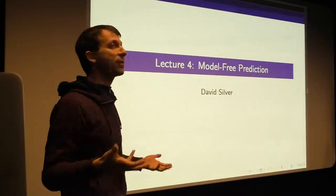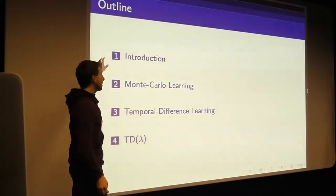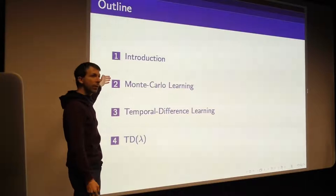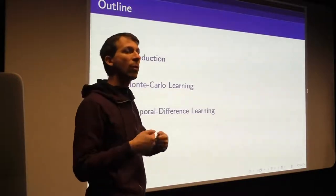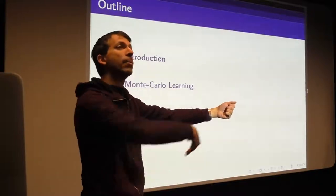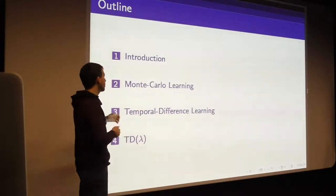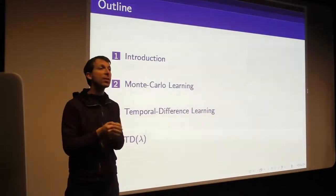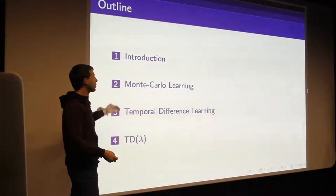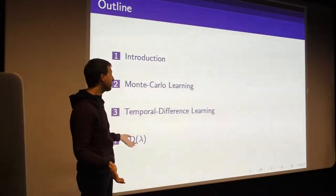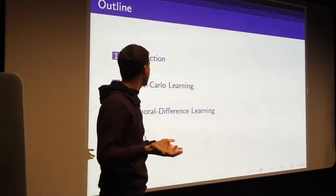Model-free methods are those for which no one tells us the environment, and the agent still has to figure out the optimal way to behave. There are two major classes we'll discuss: first, Monte Carlo learning, where we go all the way to the end of a trajectory and estimate value by looking at sample returns; and second, temporal difference learning methods, which look just one step ahead to estimate the return.